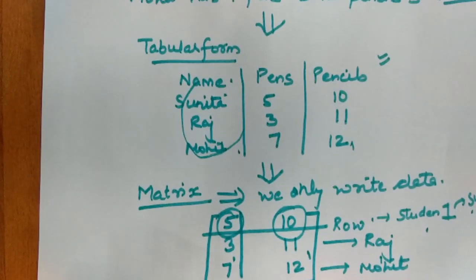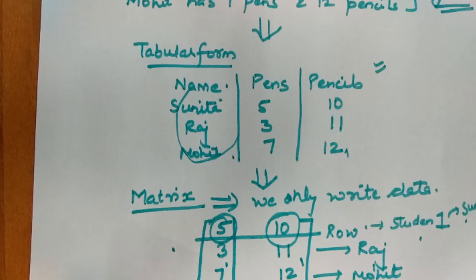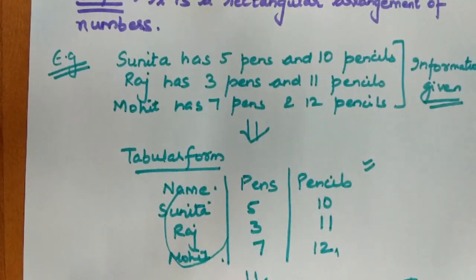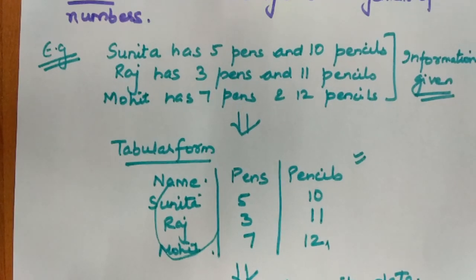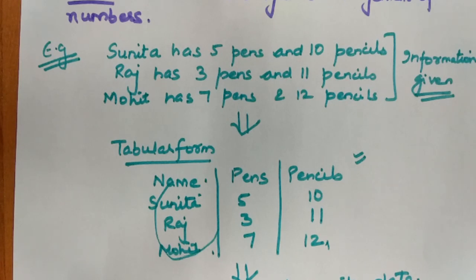Now you can understand that our matrix is very important. If we have any information or situation that we want to represent mathematically, we use the matrix, which is very easy. Compared to writing in English or in tabular form, the best approach to represent any information is a matrix. I hope you have a basic introduction to matrices clear. In the next videos, we will cover basic concepts and continue. Don't forget to like, subscribe, and comment. If you have any query or want to ask about any topic, you can ask questions in the comments section and our team will answer you.